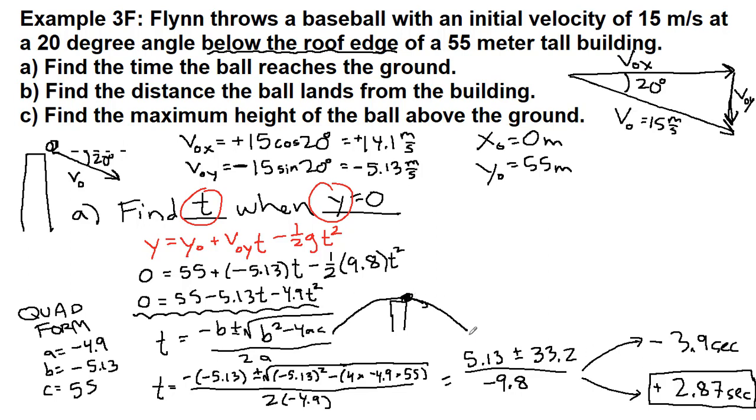To get from this point to the ground, it takes 2.87 seconds. To get from this point over to the roof where it's now going downwards would take 3.9 seconds. These two numbers always have mathematical meaning, but this is the one that fits our actual situation.